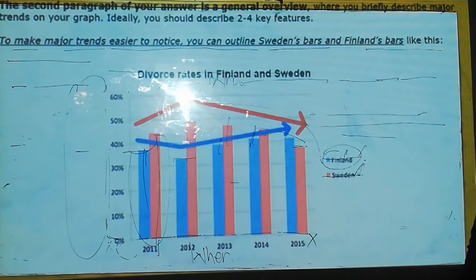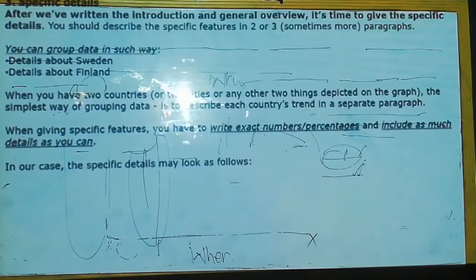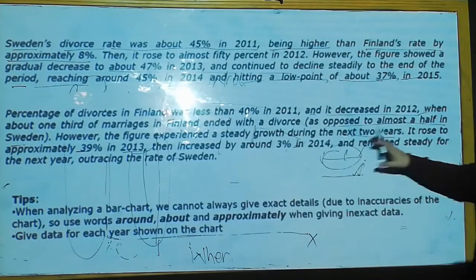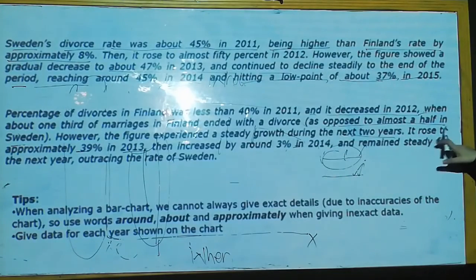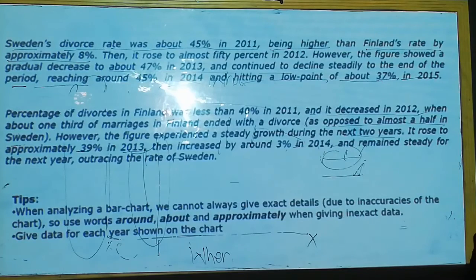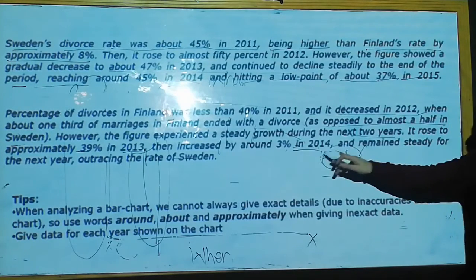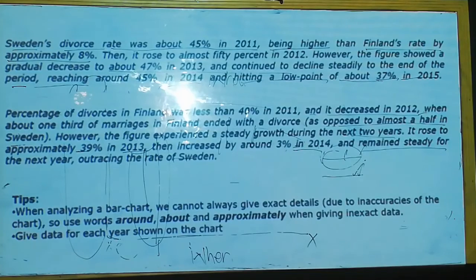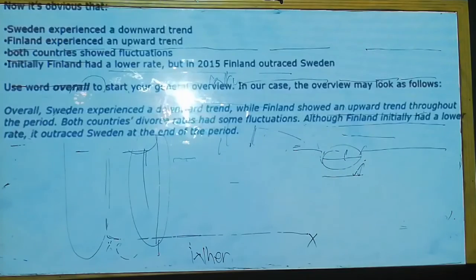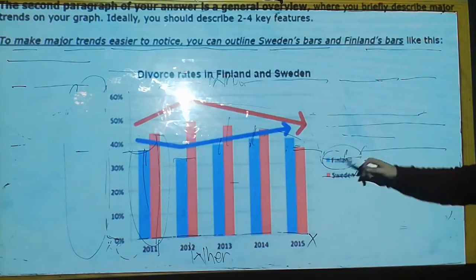It rose to approximately 39% in 2013, then decreased by around 3% in 2014 and remained steady for the next year, outpacing the rate of Sweden. This is how we can explain all the things about the graph.